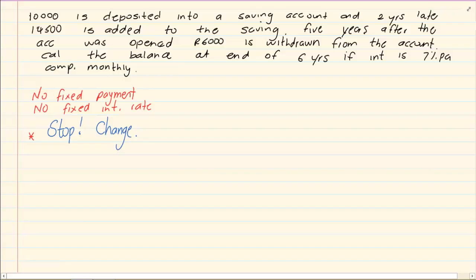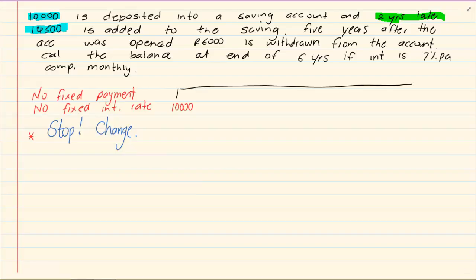Alright let's take the following example. 10,000 Rand is deposited into a savings account. So we know we are going to start with 10,000 Rand. It says 2 years later 14,500 is added to the account. So what does that mean? It means after 2 years I am going to add 14,500.